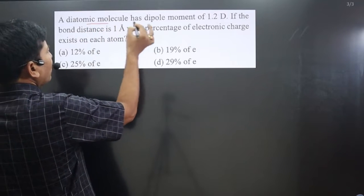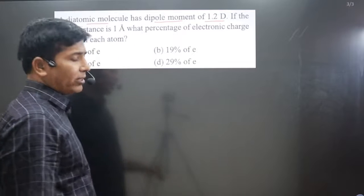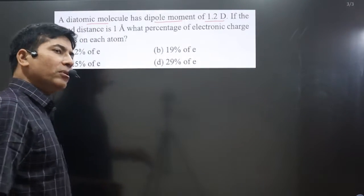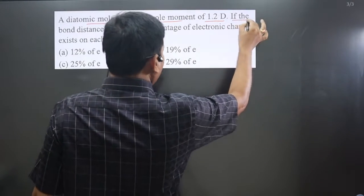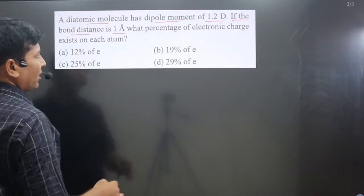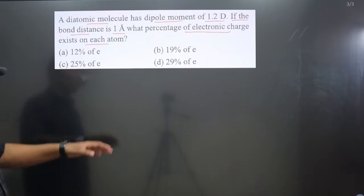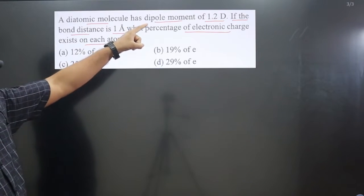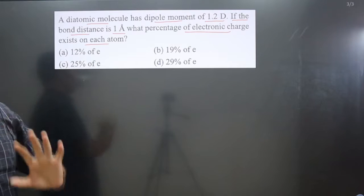The question says a diatomic molecule has dipole moment of 1.2 Debye. Debye is the unit of dipole moment. Coulomb meter is also the unit of dipole moment. If the bond distance is 1 angstrom, what percentage of electronic charge exists on each atom? We have to calculate percentage of electronic charge.